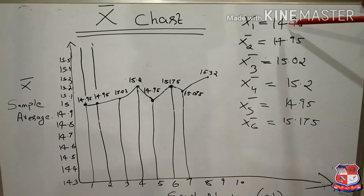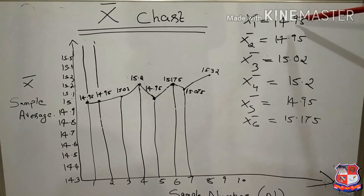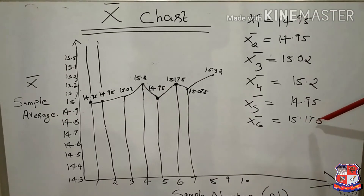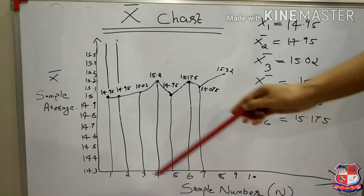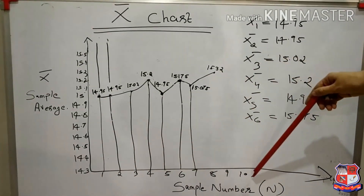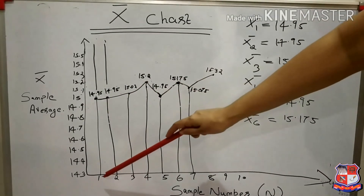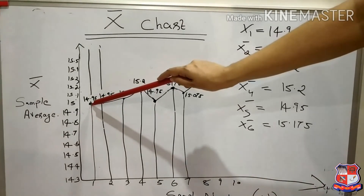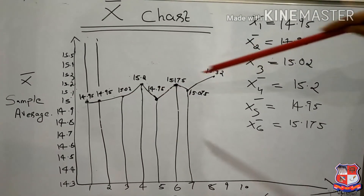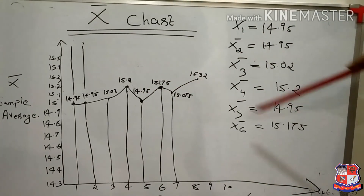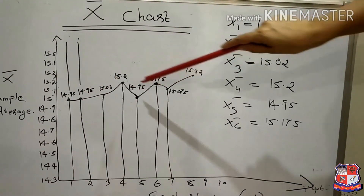For the x̄ chart, the starting value x̄₁ = 14.95 and the highest value x̄₆ = 15.175. The y-axis scale is chosen from 14.3 to 15.5, and the x-axis shows sample numbers 1 to 10. x̄₁ is marked at 14.95, x̄₂ also at 14.95, x̄₃ at 15.02, x̄₄ at 15.2, and continuing up to x̄₆ at 15.175. This gives the x̄ chart.